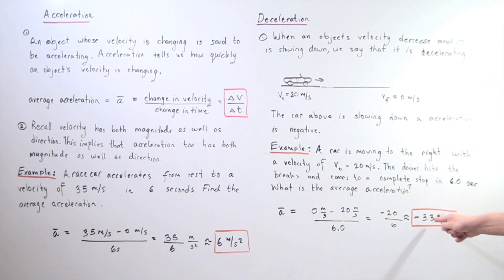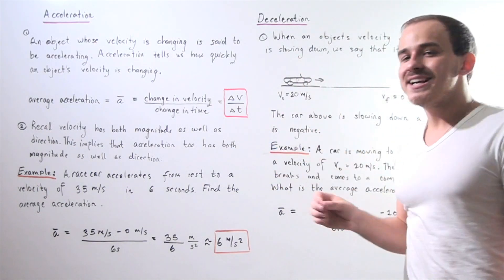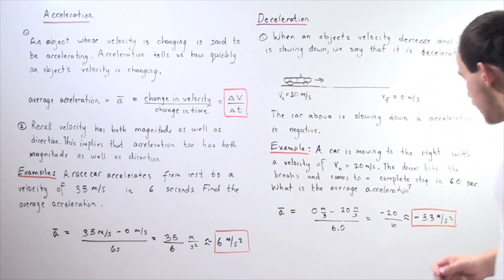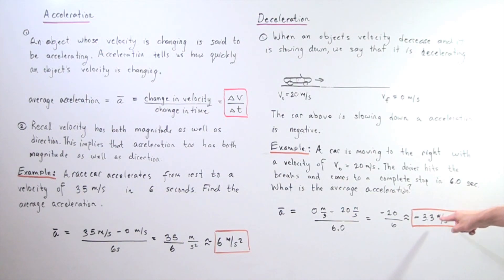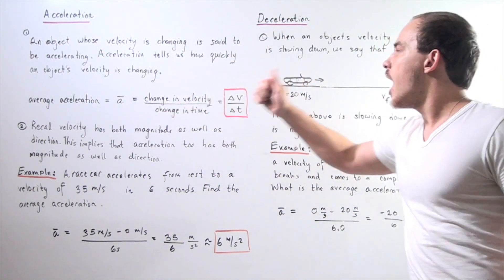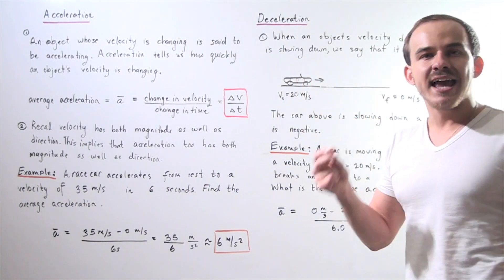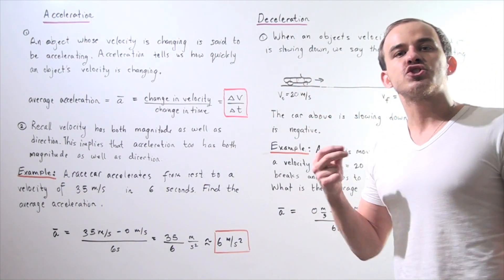We get negative 20 divided by 6, approximately negative 3.3 meters per second squared. So our object, the car, is accelerating at a rate of 3.3 meters per second squared in the negative opposite direction of its velocity, a.k.a. it's decelerating, it's slowing down.